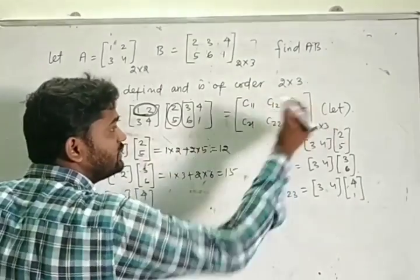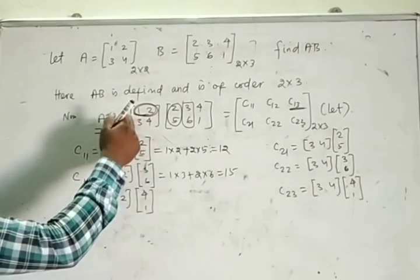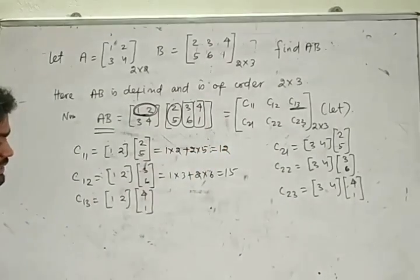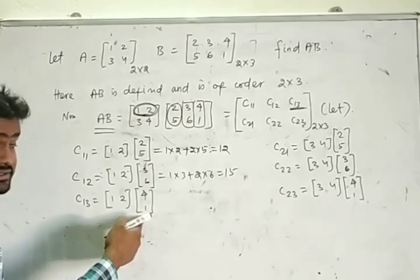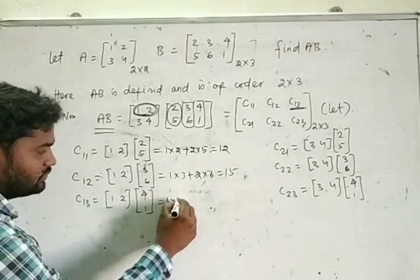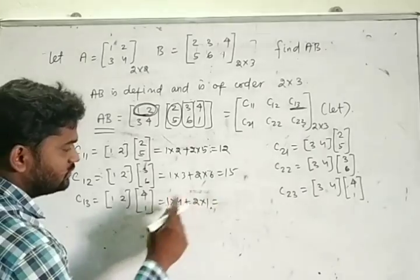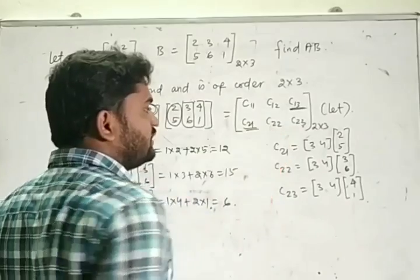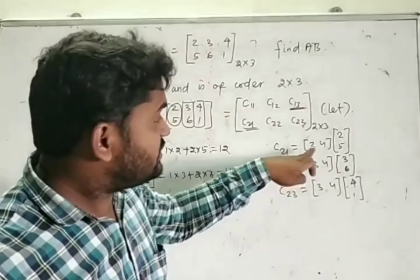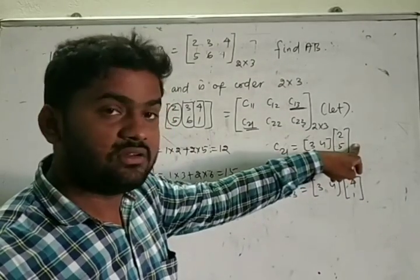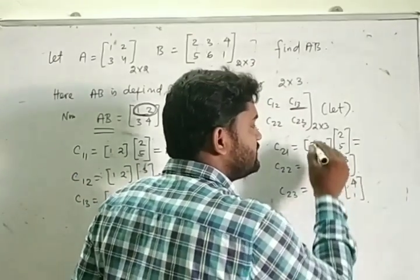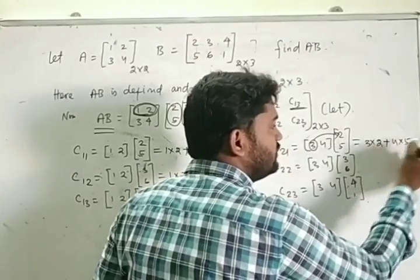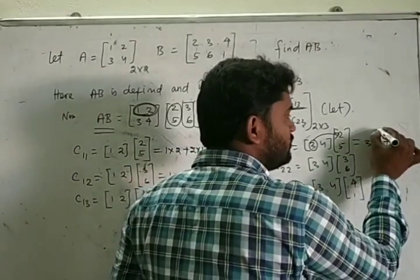The element C13 is obtained by multiplying the first row of matrix A with the third column of matrix B: 3×2 + 4×5 = 6 + 20 = 26. The element C21 is defined by multiplying the second row of matrix A with the first column of matrix B.